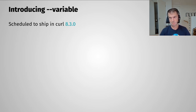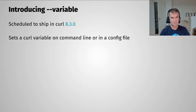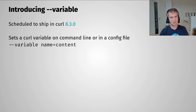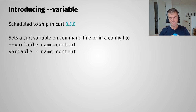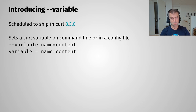This is scheduled to ship in curl 8.3.0, targeted for September 2023, so keep an eye on that — it won't exist in earlier versions. You set a curl variable on the command line or in a config file with a name equals sign and the content you want to assign. The first example shows the command line syntax and the second shows how you do it in a config file — very similar syntax.